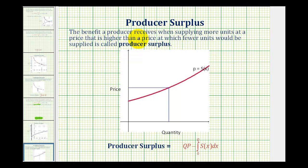The benefit a producer receives when supplying more units at a price that is higher than a price at which fewer units would be supplied is called producer surplus.